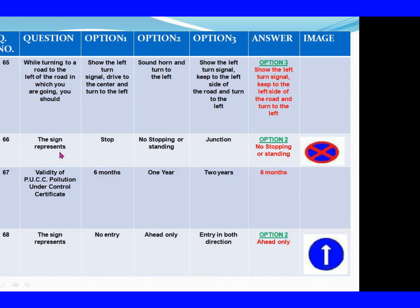Question 66: The sign represents. Option 1: Stop. Option 2: No stopping or standing. Option 3: Junction. The right answer is Option 2: No stopping or standing. Question 67: Validity of PUCC (Pollution Under Control Certificate). Option 1: 6 months. Option 2: 1 year. Option 3: 2 years. The right answer is Option 1: 6 months.